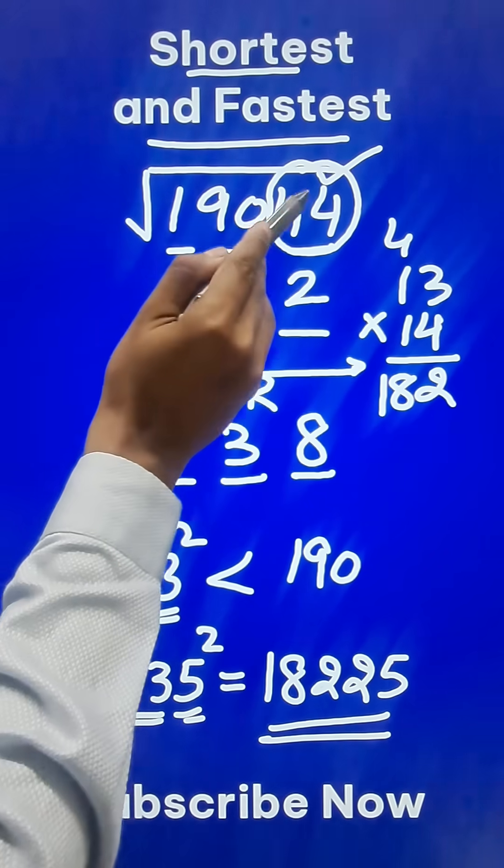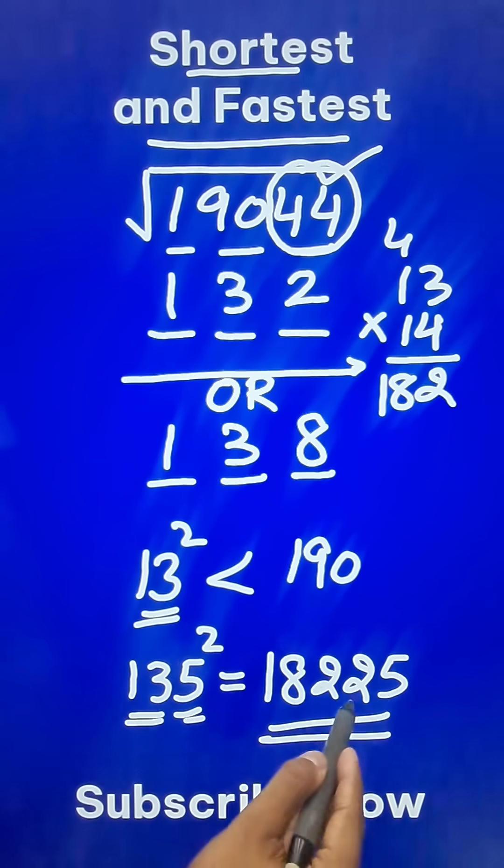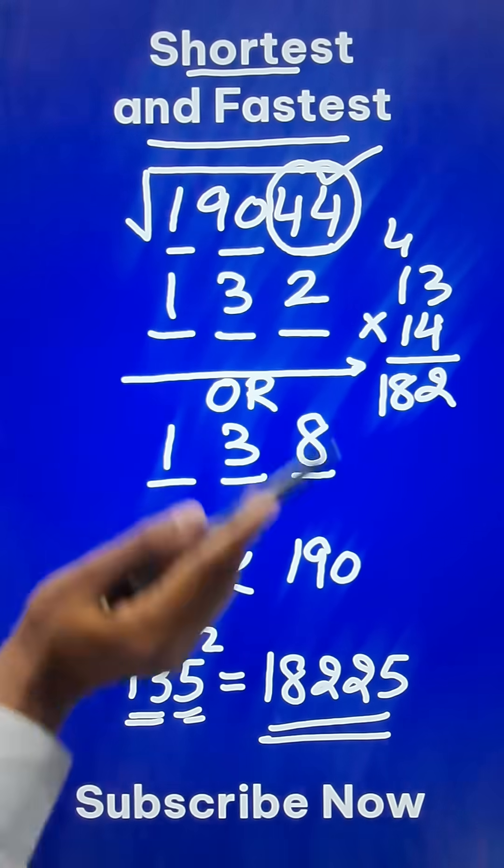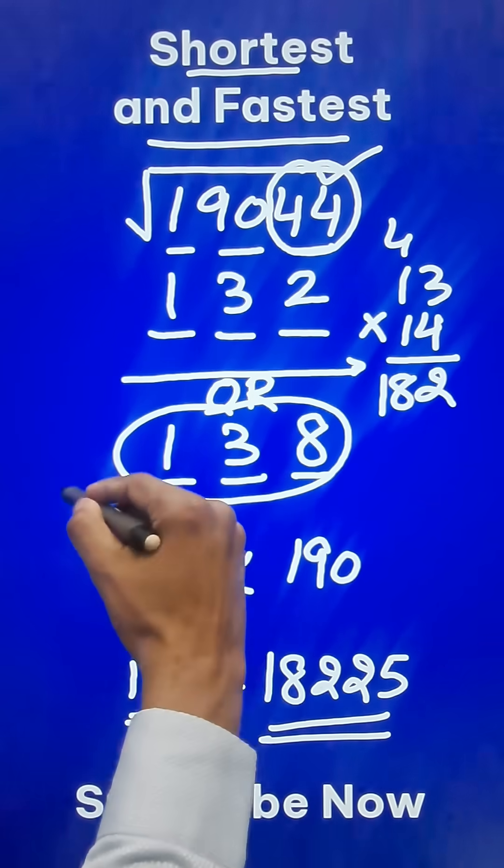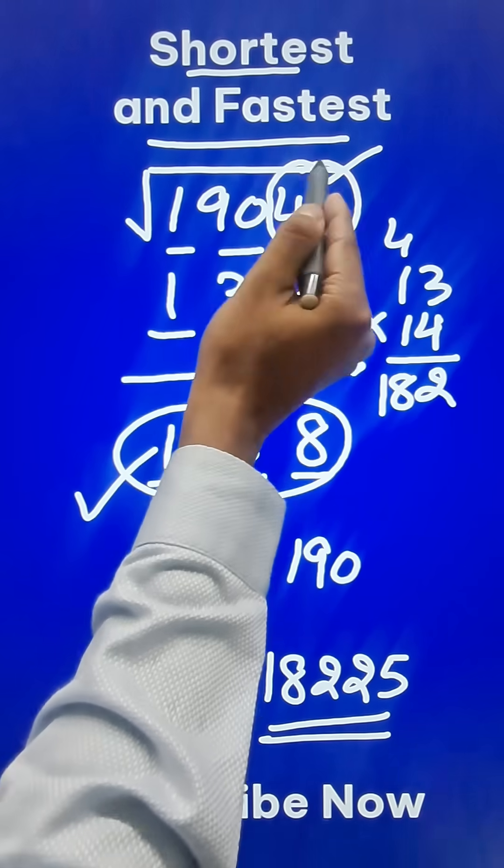If you compare 19044 with this number 18225, this number is bigger than 18225. And so the bigger one, 138 is the required square root of 19044.